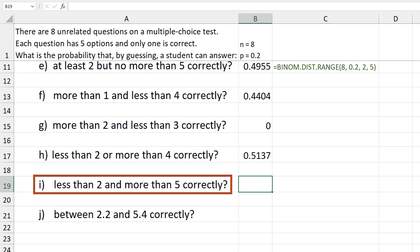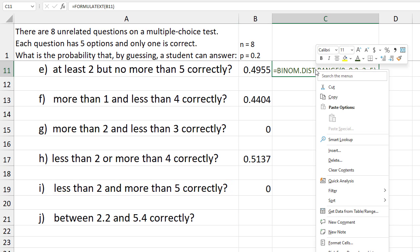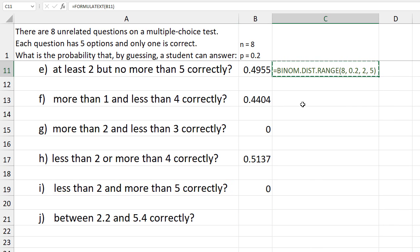For i, we cannot have less than 2 and more than 5 at the same time. So the probability is 0. I'm going to copy and paste the formula text function again here.